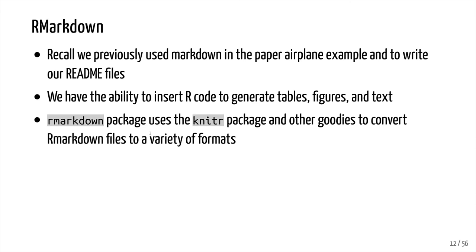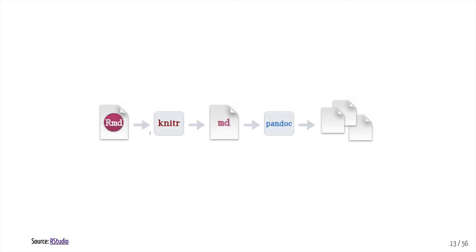R Markdown is the idea that we can take Markdown and embed R code into it to generate text, tables, and figures. The R Markdown package uses the knitr package and other tools to convert R Markdown files into a variety of formats. You write in R Markdown, use knitr to convert that to Markdown, and then a program called Pandoc will convert that Markdown into a variety of formats. All you need to worry about is writing the R Markdown and setting what output you want.